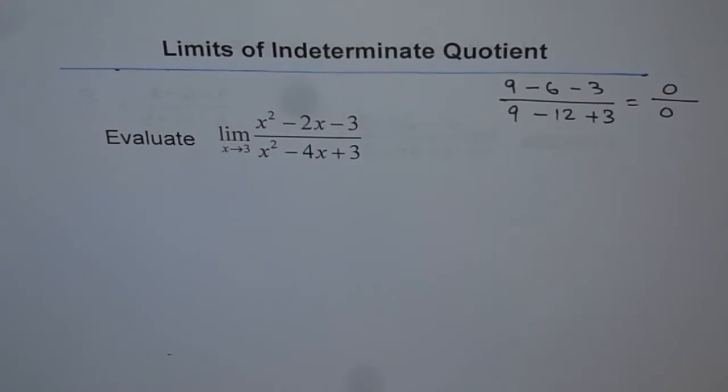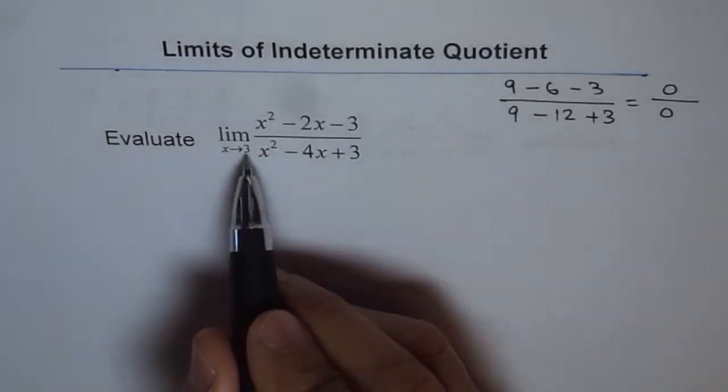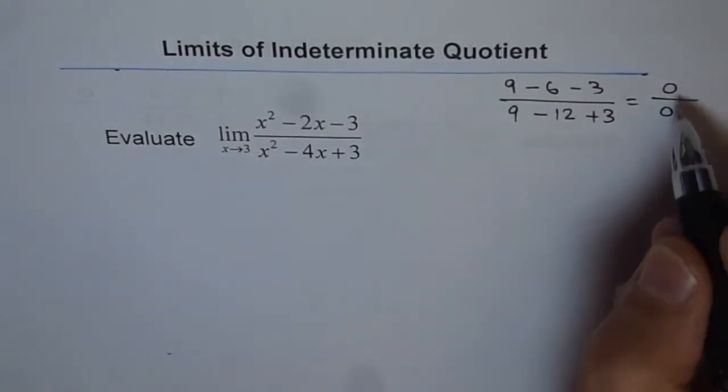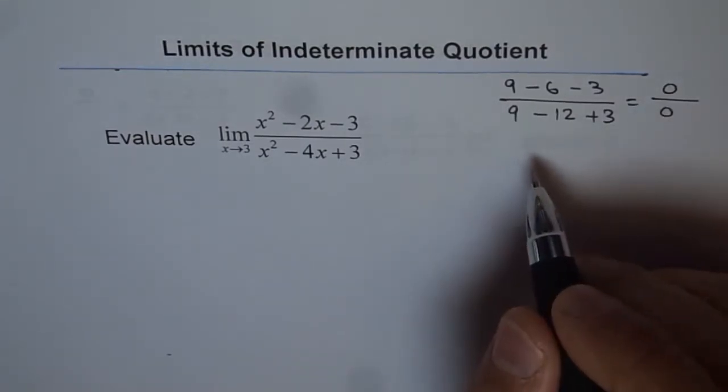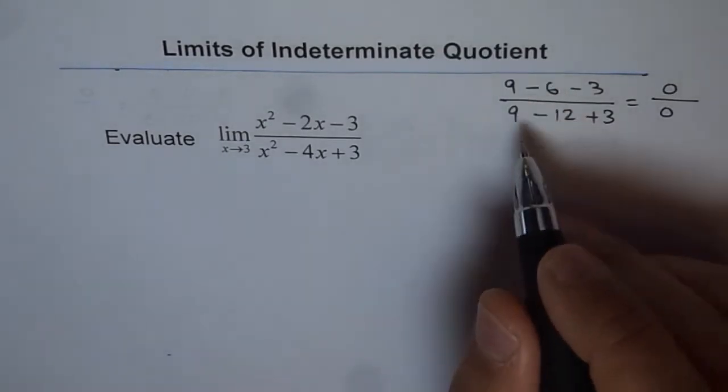So we get 0 over 0 after substituting the limiting value. So if we get this, which is not meaningful for mathematics, we say that this is indeterminate quotient form.